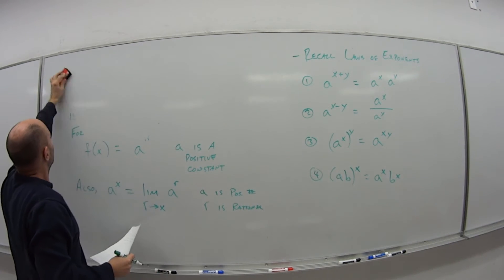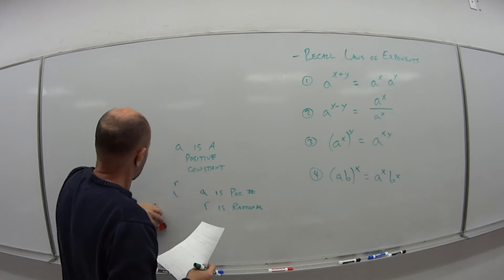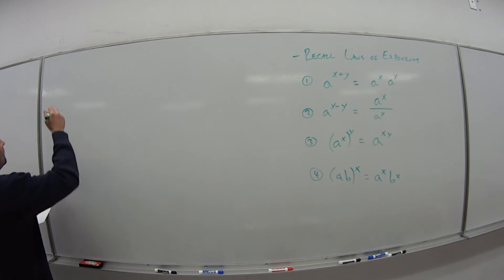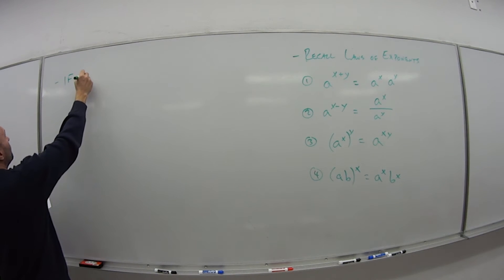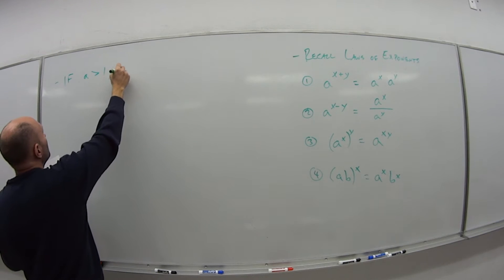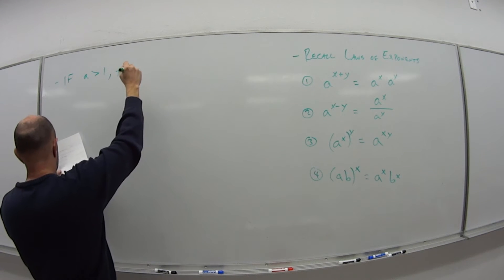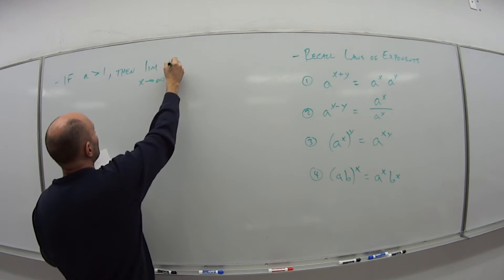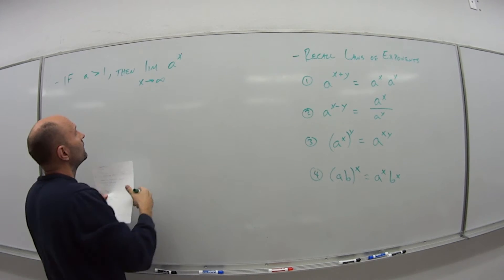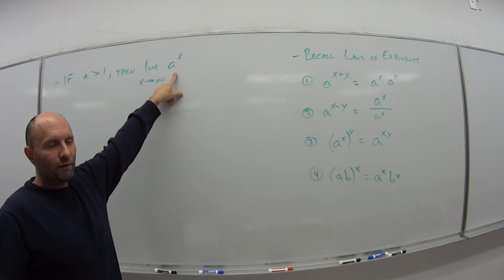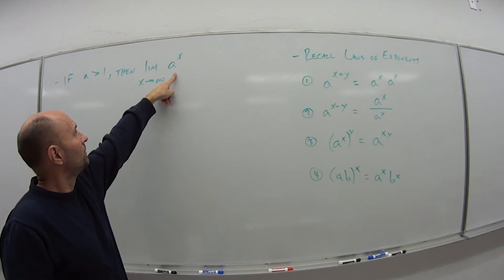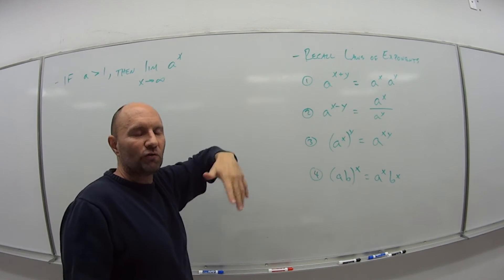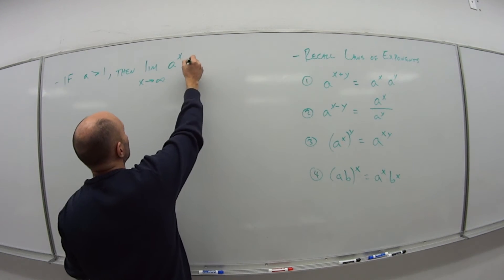Some calculus here with some limits. So we have that if a is greater than 1, then the limit as x goes to infinity of a to the x. So think about what's happening here. If a is bigger than 1, let's say this is 10. So as x goes to infinity, that means 10 to the infinity power is what? Well, that's positive infinity.